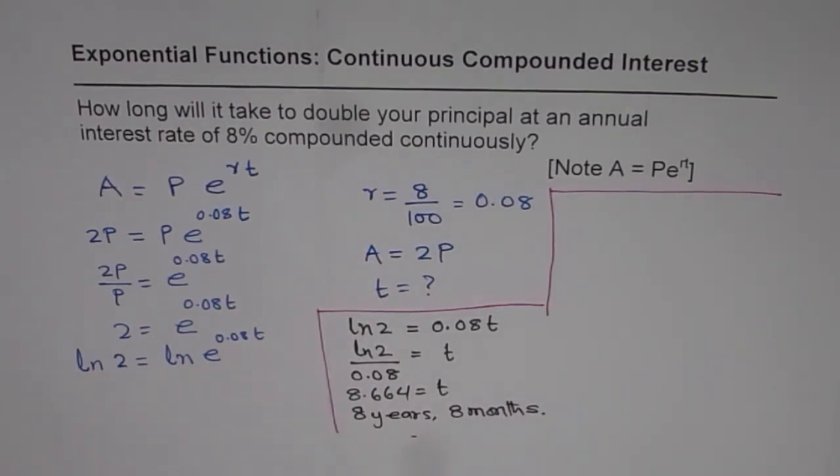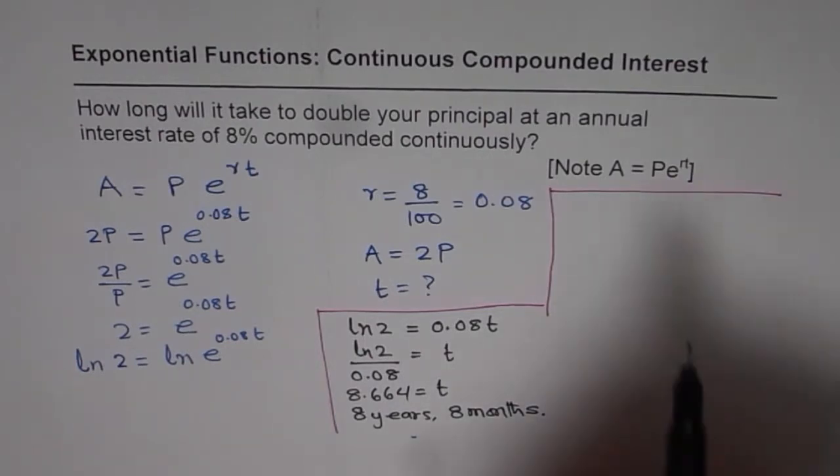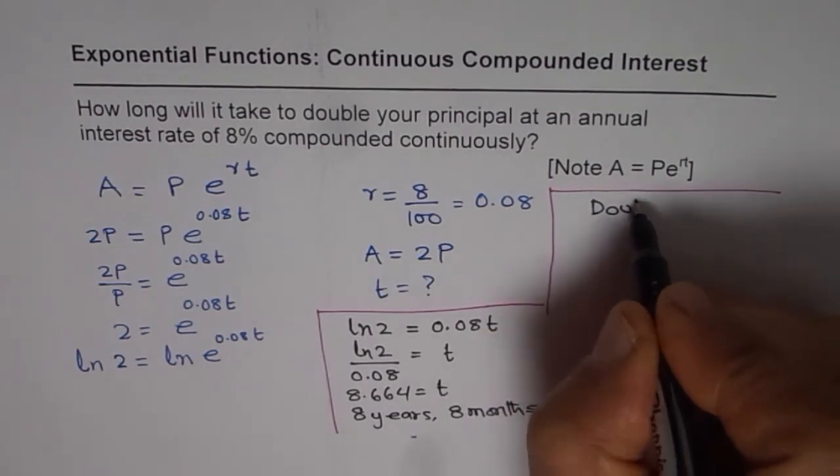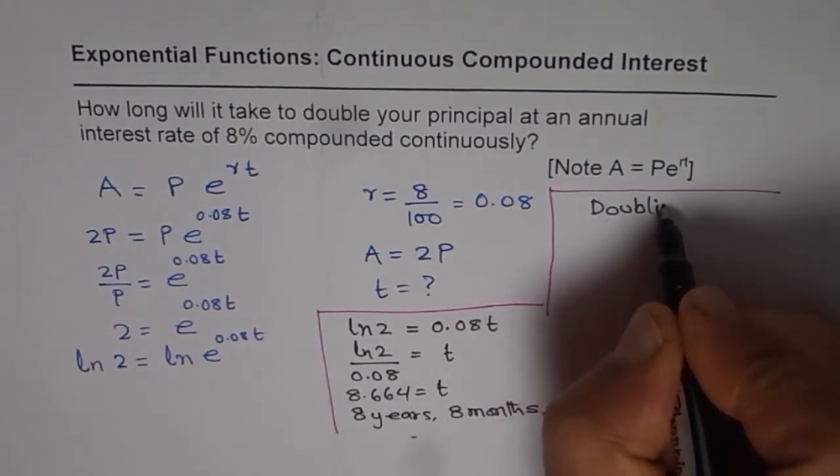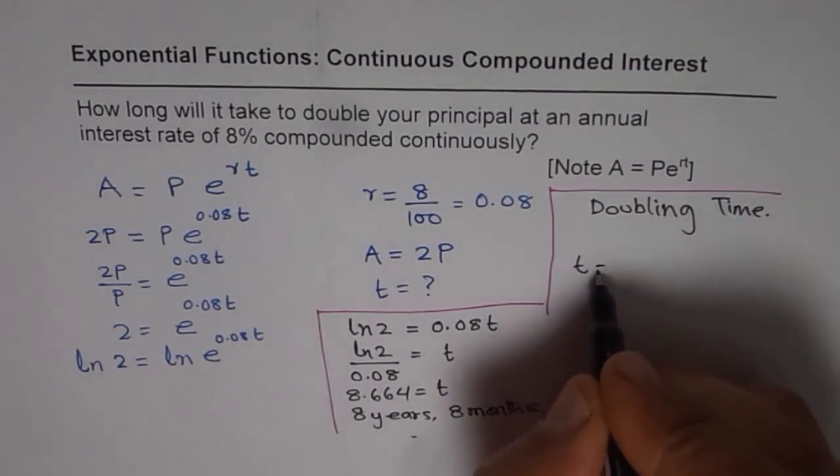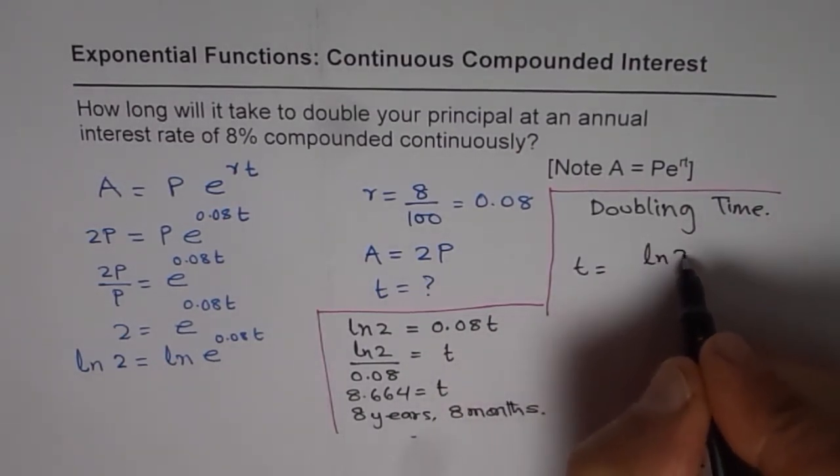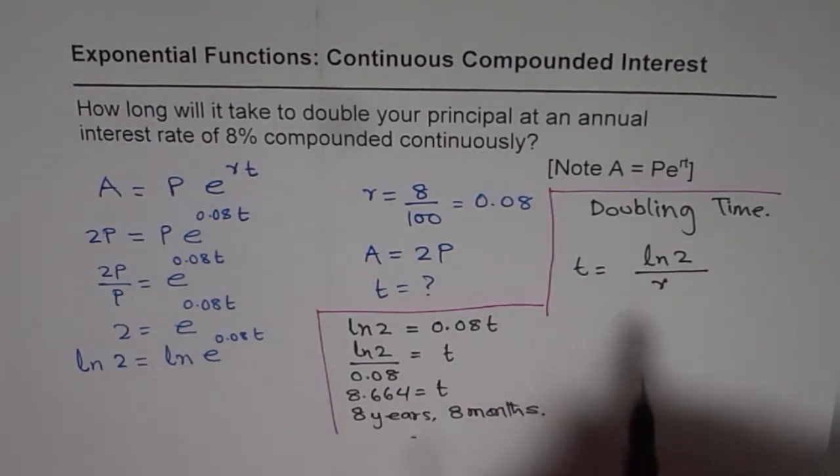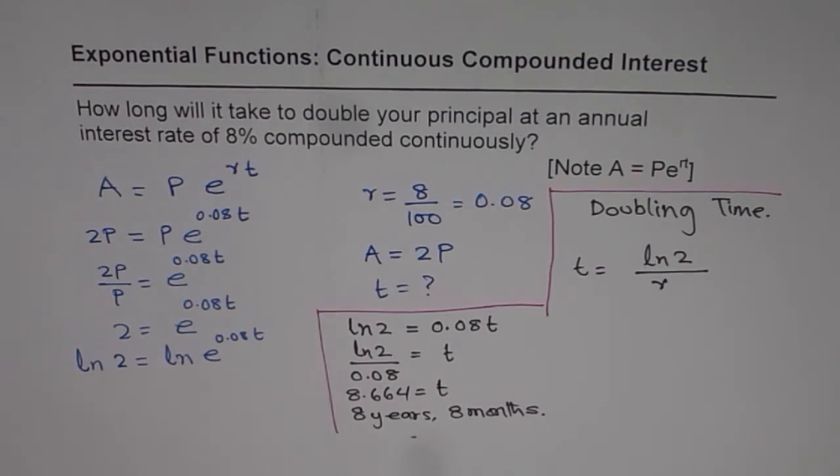So that is how you can solve this particular question or any question likewise. In general, if we are talking about the doubling time, then t equals ln 2 over rate of interest. So that becomes the formula to find the doubling time when compounded continuously.